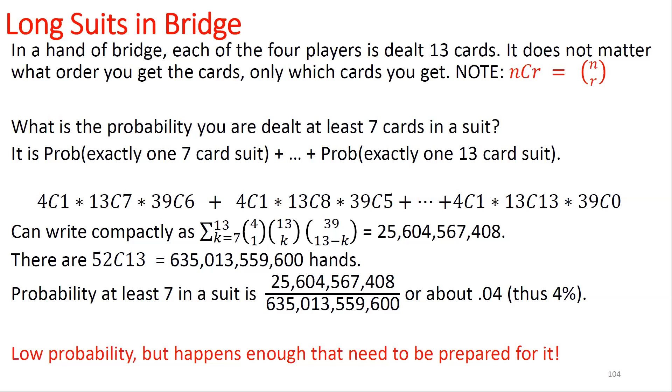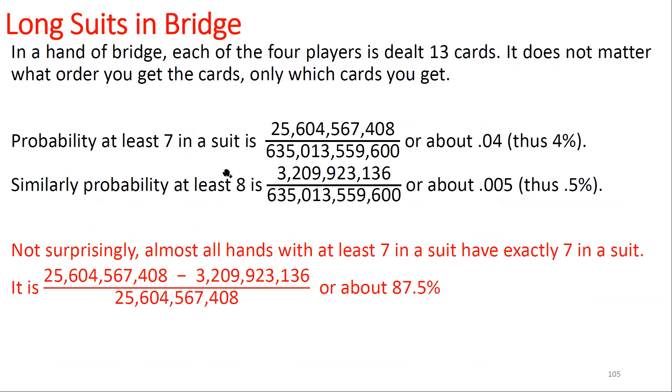Is 4% a significant probability? When you're playing a bunch of bridge hands, do you expect to see this happening? Yeah. Should your conventions have ways to bid 7-card suits? Yeah. 4% of the time, you should have a 7-card suit. You can calculate the probability two people have a 7-card suit, and you know their 7-card suits cannot be the same. The probability we have at least a 7-card suit is 4%. The probability we have at least an 8-card suit is 0.5%. So almost all hands with at least 7 cards in a suit have exactly 7 cards. About 87.5% of the time, if you have at least 7 cards, it's going to be exactly 7 cards in the suit.